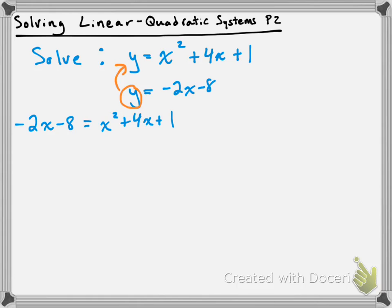So I'm going to add 2x and 8 to both sides and clean it up a little bit, and what's that going to give us? We'll get 0 is equal to x squared plus 6x plus 9.